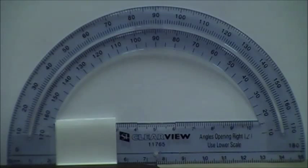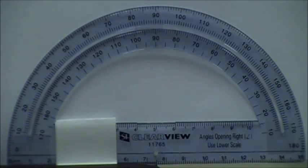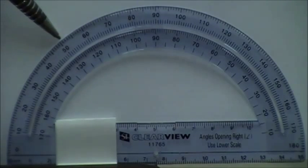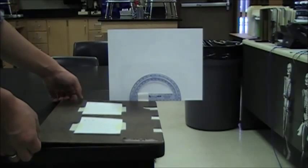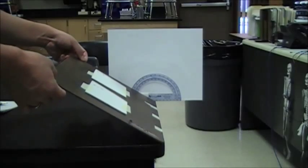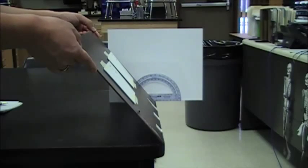To calculate the desired impact angle, the protractor will start at 90 degrees. Next, you'll take your angle assigned and subtract that from 90 degrees. In my case, my angle assigned was 40 degrees, so 90 minus 40 is 50 degrees. Once I've calculated my angle of impact, then I'll raise my whiteboard to that angle, in my case 50 degrees.